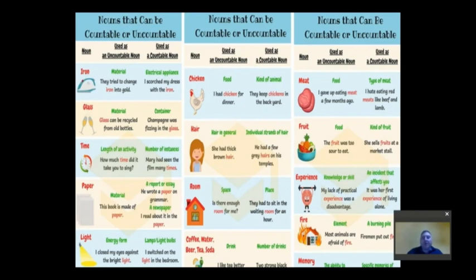Or time. Is it time as in clock time, or 'I have seen that film so many times'? Is it the number of times we repeated an activity? There are many more examples like paper, light, chicken, hair - very common mistake. When you say 'hair in general, she has thick brown hair,' it refers to all her hair. But when you say 'hairs,' it refers to individual strands.